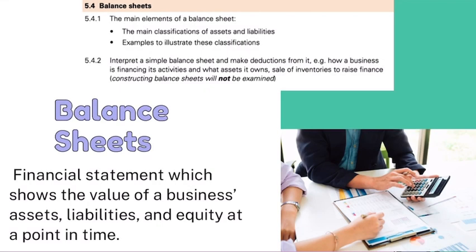Balance Sheets — this is the syllabus for it: the main elements of a Balance Sheet. We are going to see how to interpret a Balance Sheet. A Balance Sheet is a financial statement which shows the business's assets, liabilities, and equity at a point in time. We are going to look at what each of these three words mean.